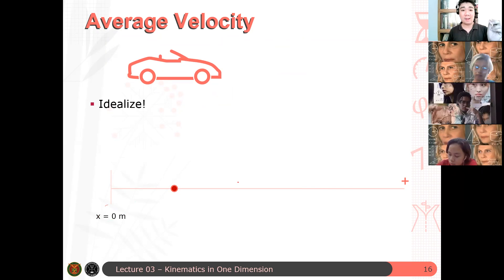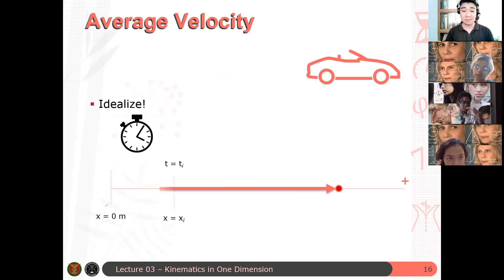So, let's idealize. We assume that initially the car is at some initial position, and x equals zero here is at the origin. But in this case, the position of the car initially is not at the origin. It's something that's far from the origin.